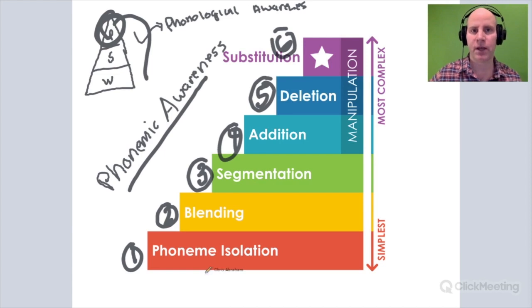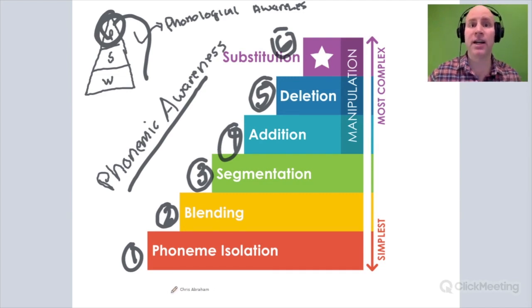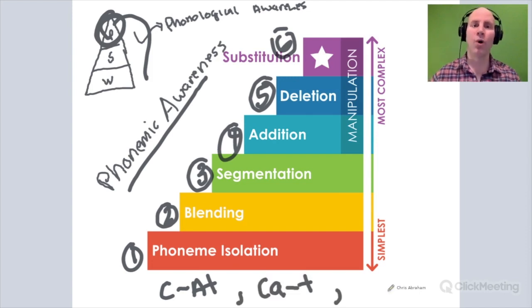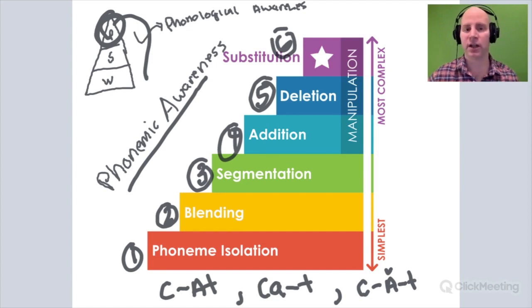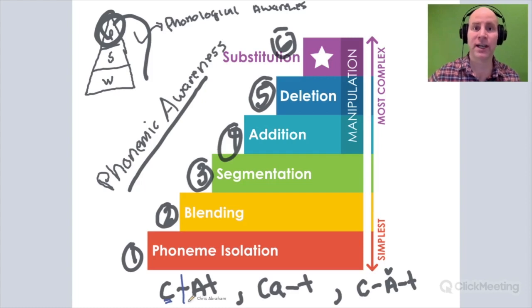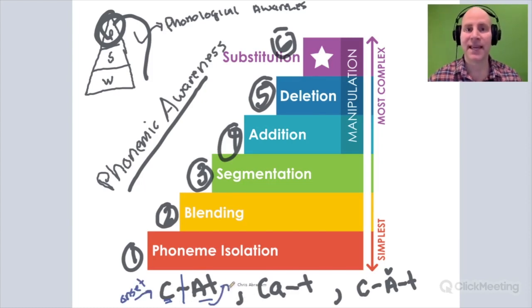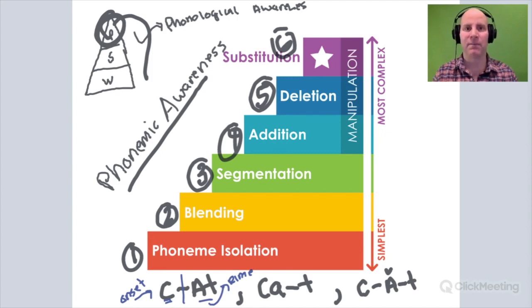Starting with phoneme isolation. If we had a word like 'cat,' you could ask a child to identify the initial phoneme — 'what's the first sound you hear in cat?' — or the end phoneme — 'the last sound you hear in cat' — or 'what is the middle sound you hear in cat? A short a.' These all involve isolating a sound within that word. There could also be a variation involving onset and rhyme. The onset within a given syllable is that first sound — so 'c' is the onset of cat — and the rhyme is the end sound, 'at.' Onset and rhyme questions fall under basic phonemic awareness, involving some aspect of isolating parts of that word.